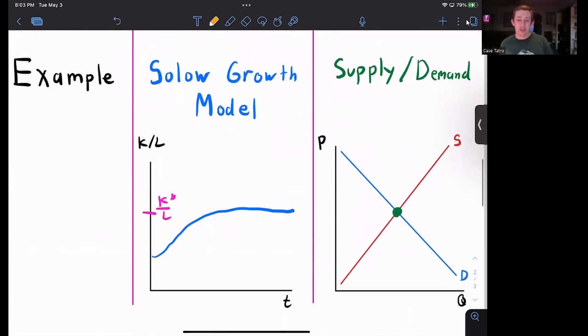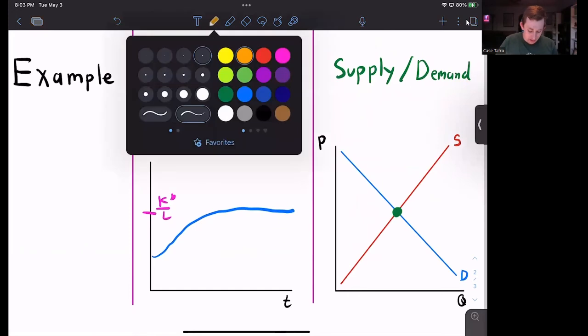So I've just drawn two graphs here. The first one is a long run steady state example from the Solow growth model. The right is a supply and demand for the equilibrium.